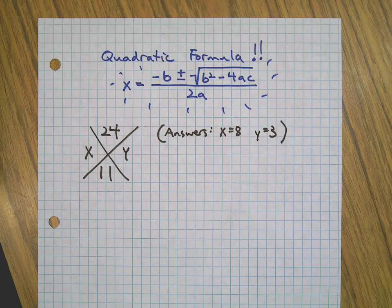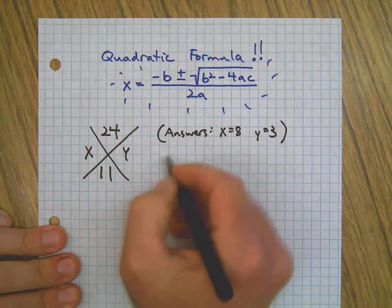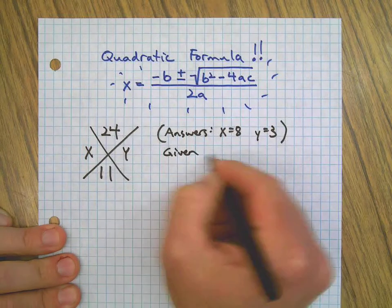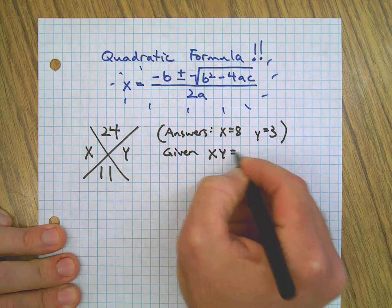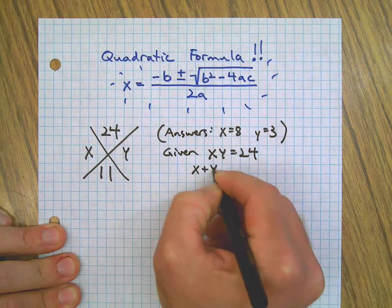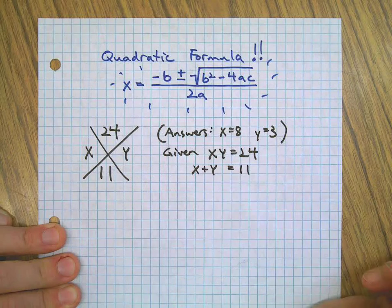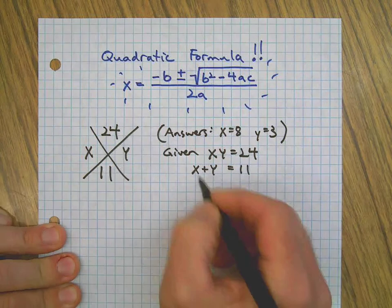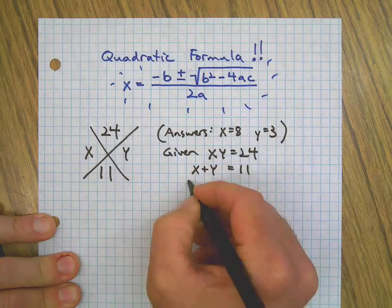So this is simply a matter of substitution. We start off with this. We are given x times y equals 24. We're also given x plus y equals 11.